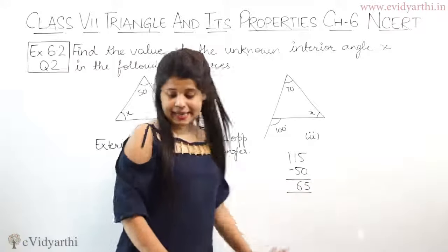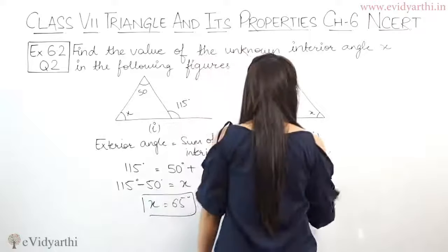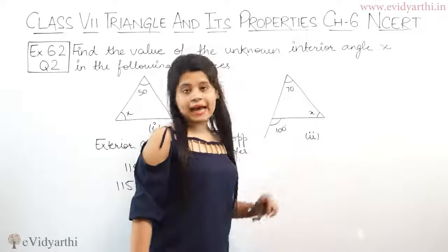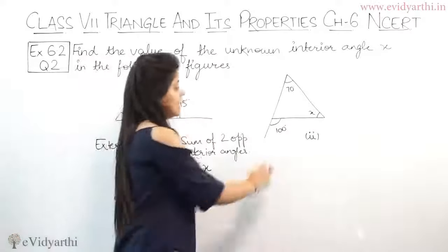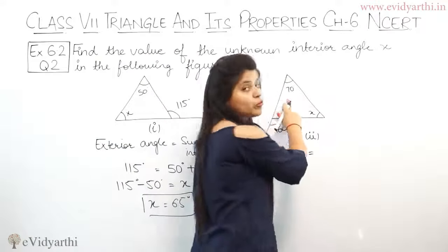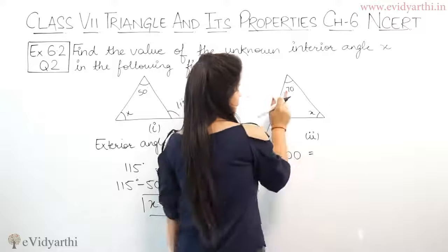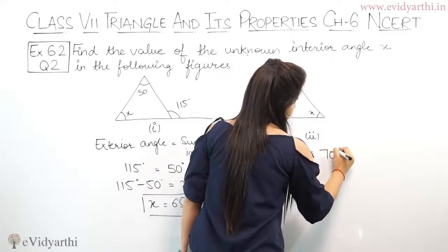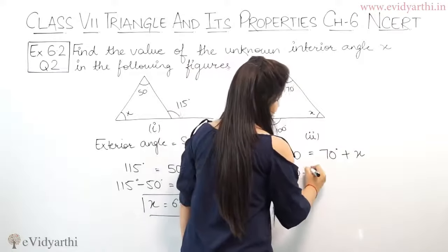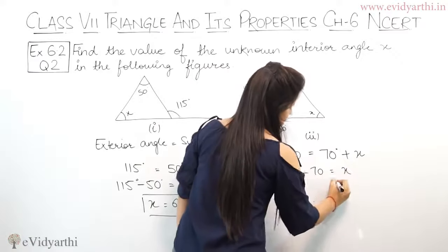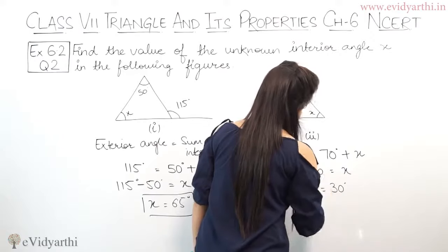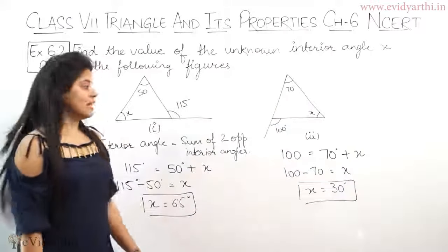Now the second part, again the exterior angle is given and we need to find the interior angle. Using the same property, exterior angle equals sum of two opposite interior angles, that is 70 and x. So 100 equals 70 plus x. This becomes 100 minus 70 equals x. So x equals 30 degrees.